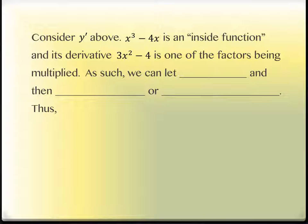If you consider the y' you have above, the x³ - 4x, that part's inside of the cosine. We would call that the inside function, and its derivative, namely the 3x² - 4, is in fact the value that's been multiplied with on the outside. The outside piece is the derivative of the piece that's inside. As such, we can let u equal the inside function, which was x³ - 4x.